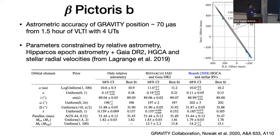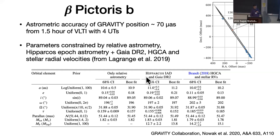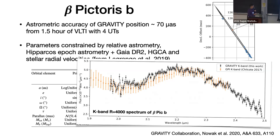Observations of Beta Pictoris B were done using four big telescopes for only 1.5 hours, achieving a position accuracy of 70 microarcseconds relative to the star. From this measurement of relative position, we derived improved orbital parameters for the planet and in particular its mass, combining with relative astrometry, intermediate data from Hipparcos plus Gaia DR2, and also acceleration data from Tim Brandt. This also provided a very good quality K-band spectrum of Beta Pictoris B showing many molecular bands.